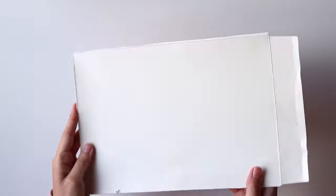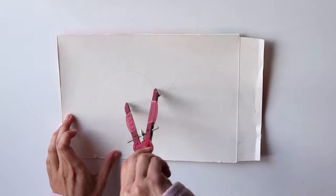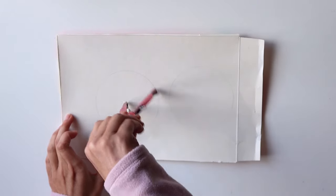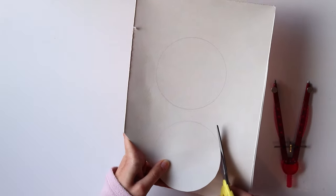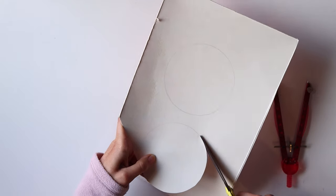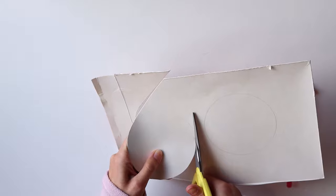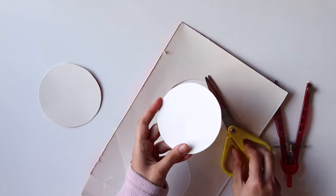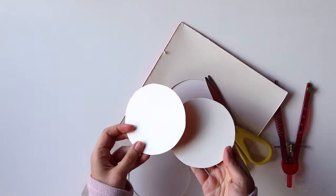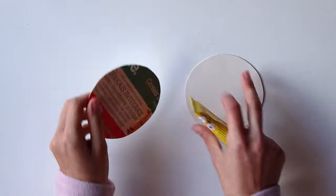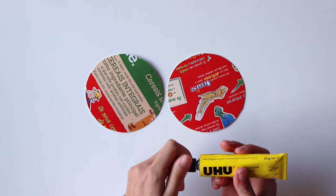To make this bracelet you'll need to create a round loom of sorts, so grab a cereal box and draw two circles, then cut them out. Glue both parts together to make them stronger.